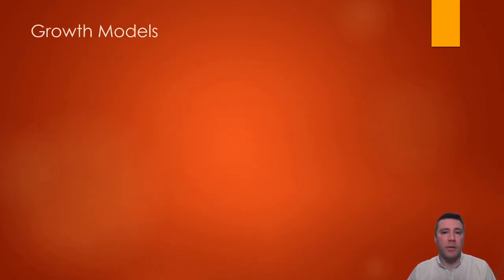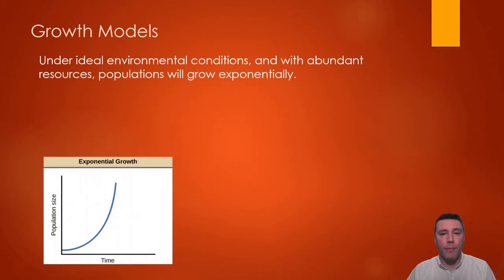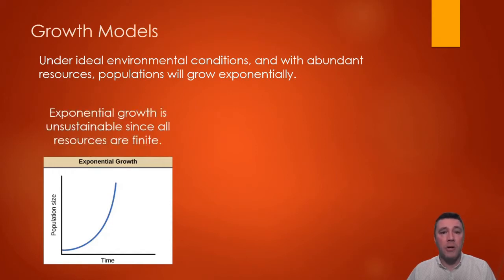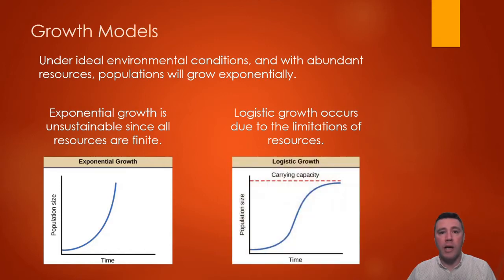With ideal environmental conditions — just like the right temperature, pH, availability of light, and abundant resources — a population will experience exponential growth. In the short term, exponential growth is exhibited by a population that is still small enough that plenty of resources are going unused. But in the long term, exponential growth is unsustainable because all resources are finite. So instead, as populations begin to feel the stress placed on them as resource consumption is greater than resource availability, their growth rate slows and levels off.